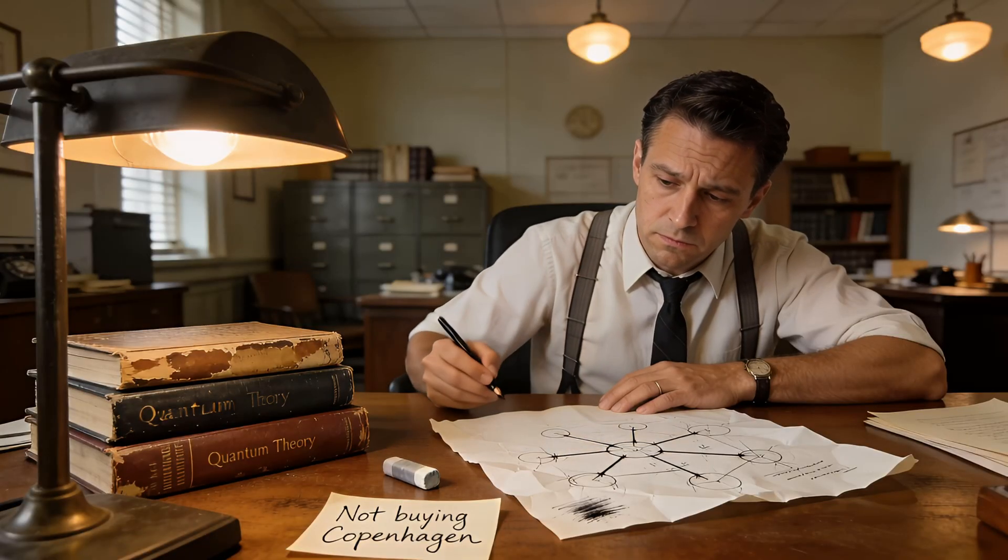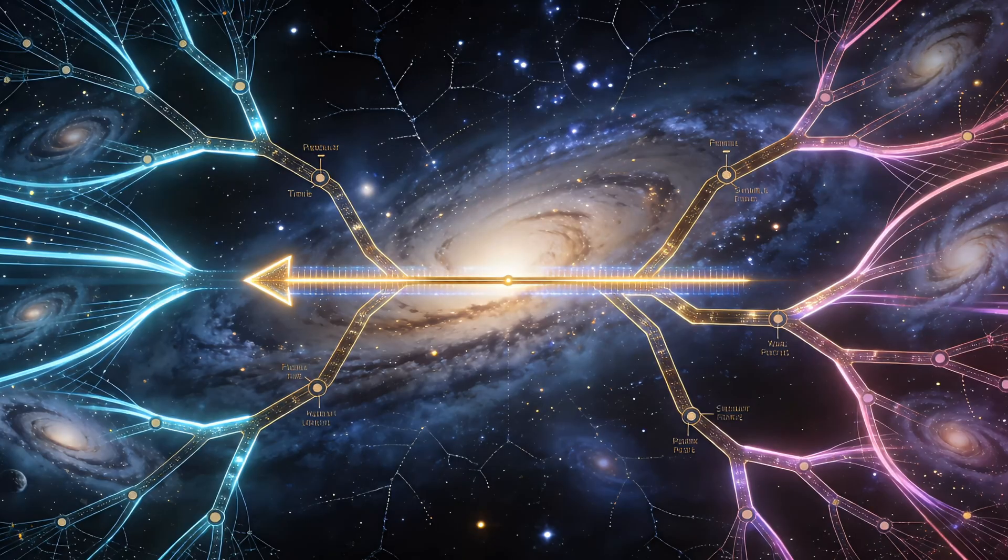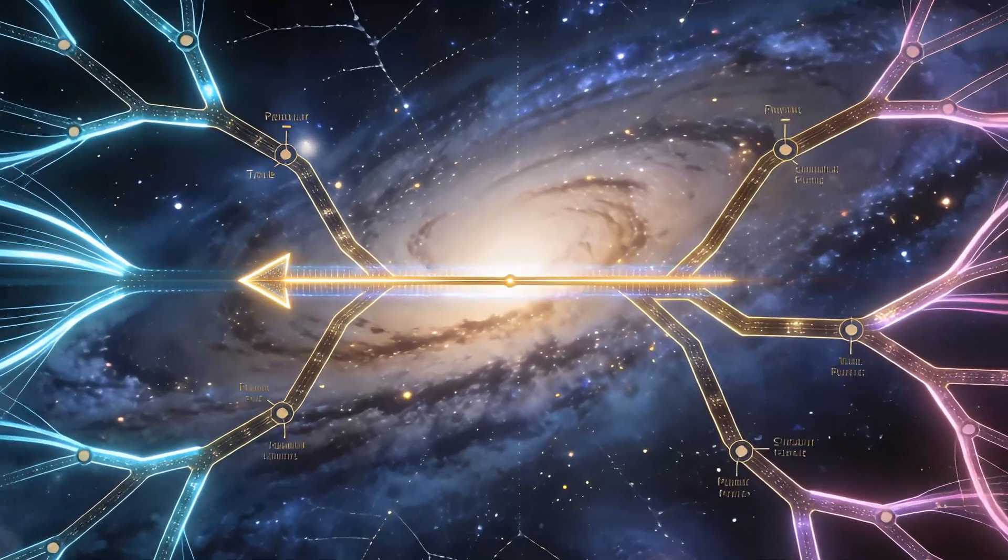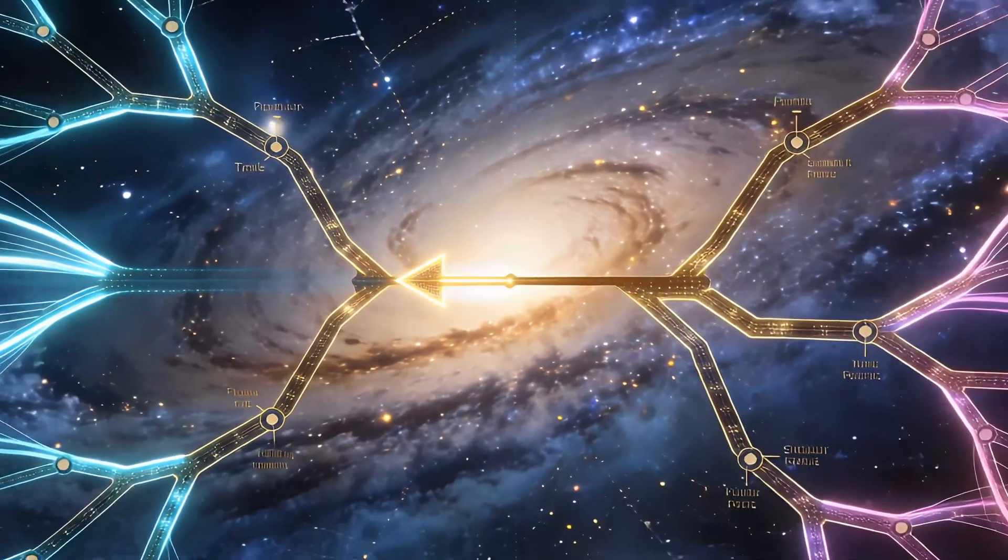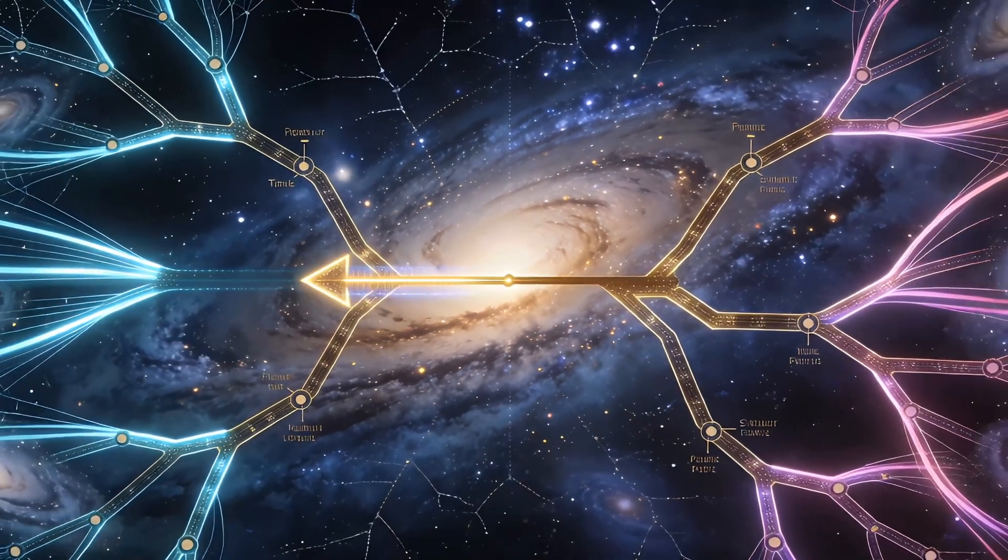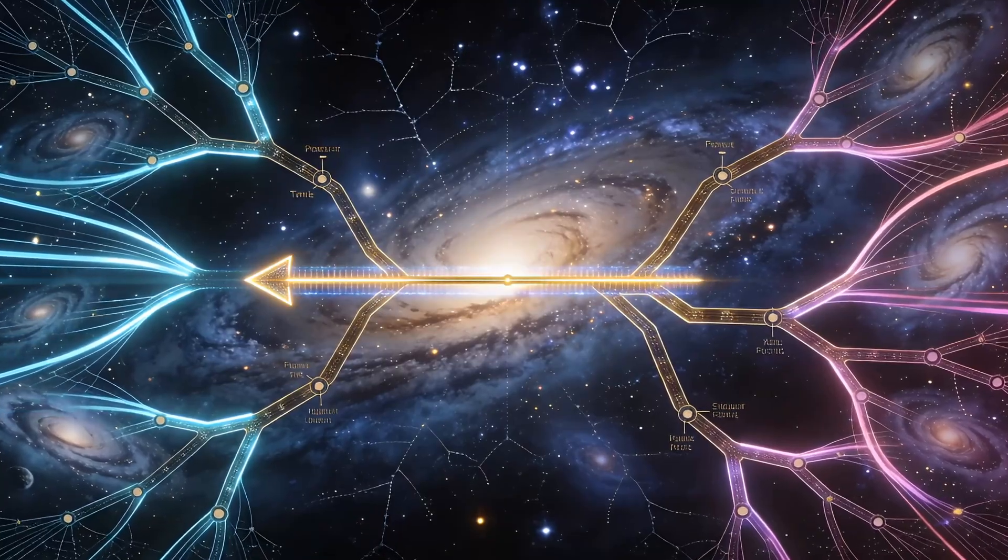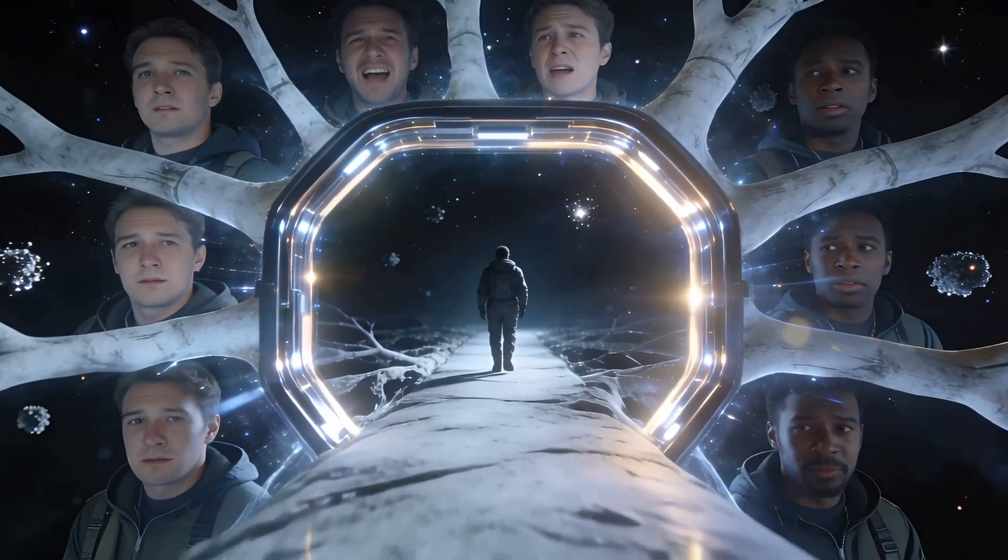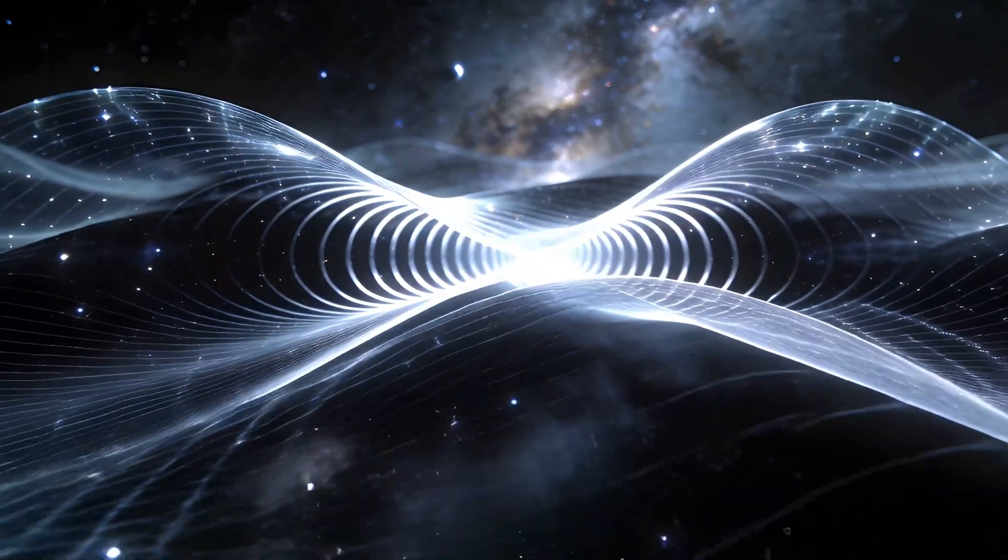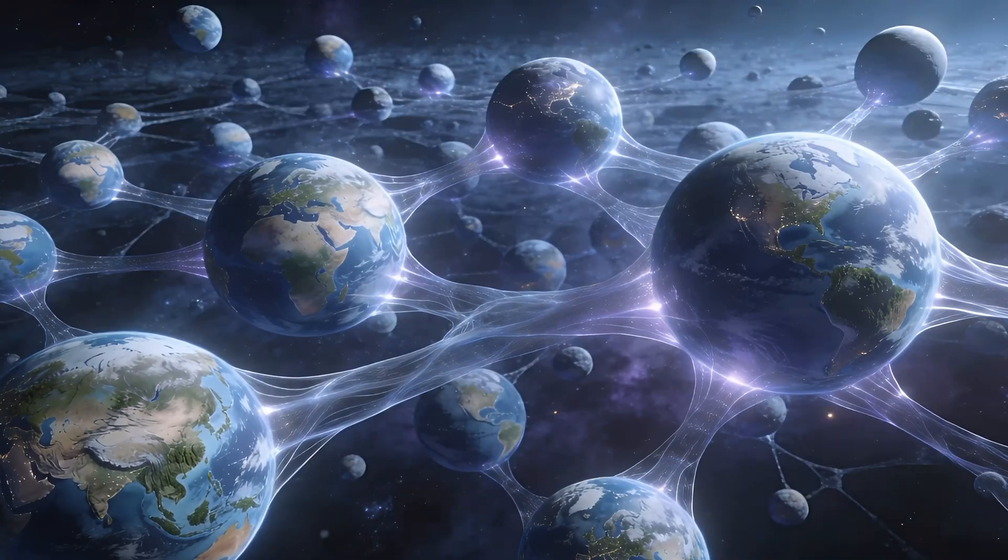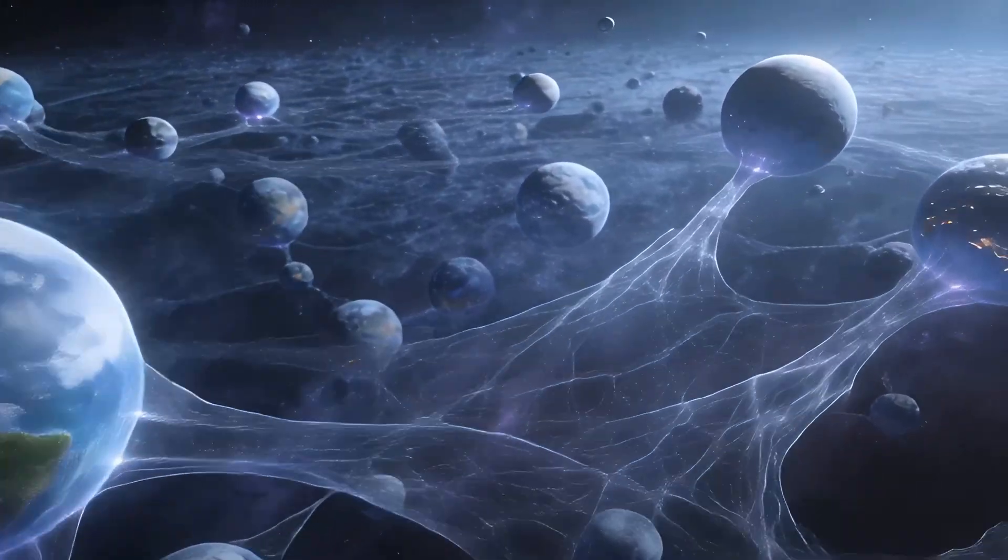Enter the many worlds interpretation, from Hugh Everett. It says that there's no collapse. Instead, every possibility happens in a branching universe. When you measure a photon, the universe splits. In one branch, it goes left. In another, right. You only see one outcome because you're in one branch. The interference is from waves in parallel worlds overlapping. It's wild, but it avoids the weirdness of collapse by saying everything happens somewhere.